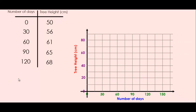Now that we have chosen which variable goes on each axis and a proper scale, there's one more label we need to add to the axis lines themselves. Each variable needs to be represented by its own letter. The number of days could be represented by the letter n, and the tree height by the letter h. These variable letters get added to the end of each axis line — that looks perfect.